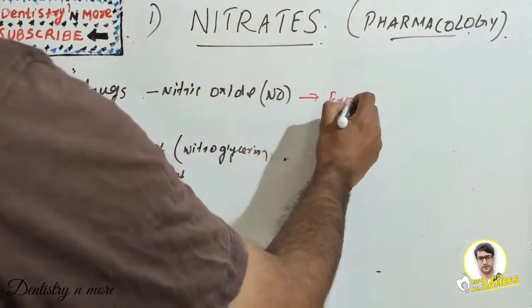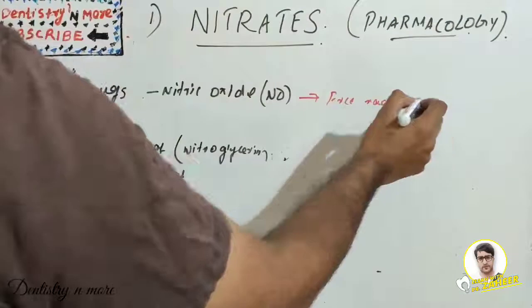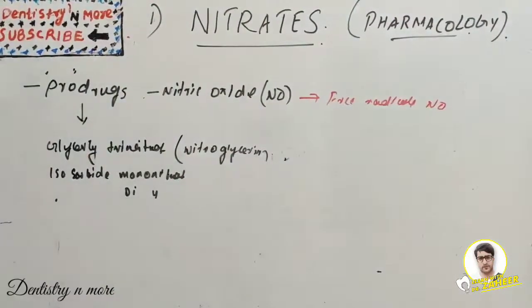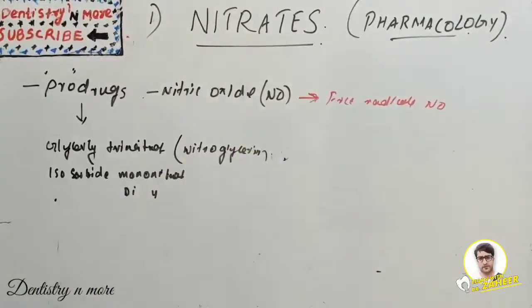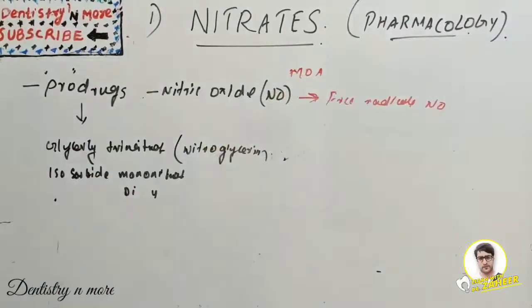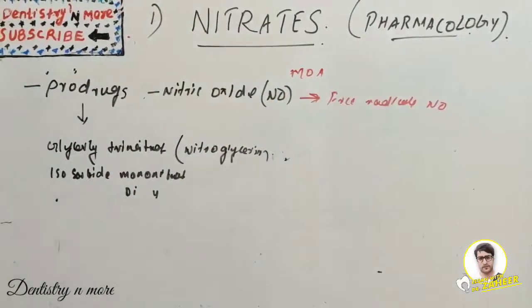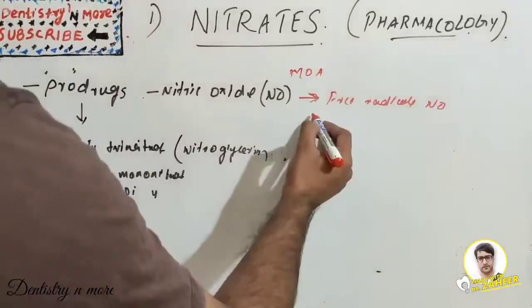Free radicals will be formed - free radical nitric oxide and related nitric oxide containing compounds. So this is the basic mechanism of action. This nitric oxide can activate guanylyl cyclase.